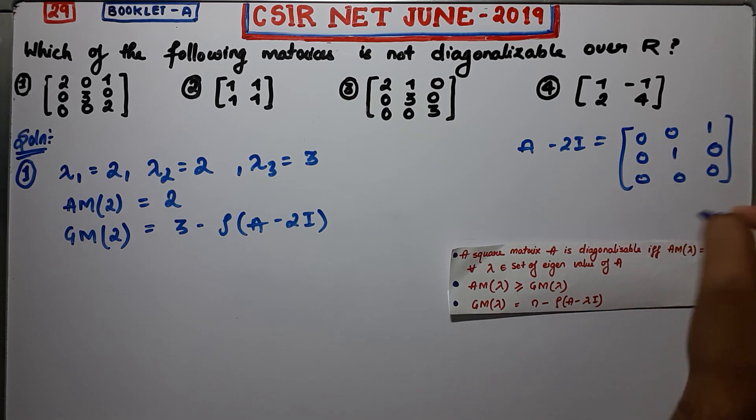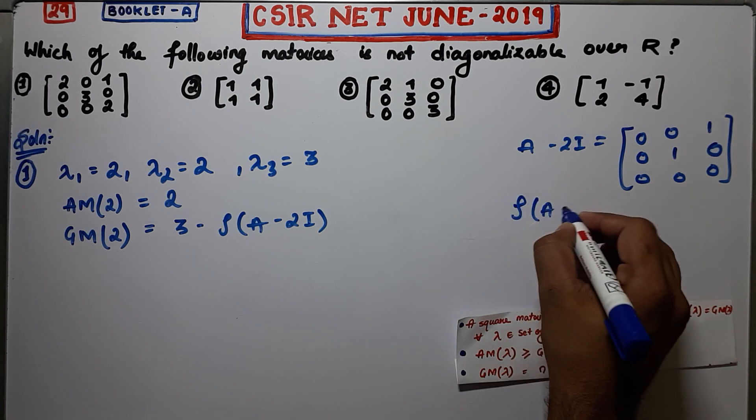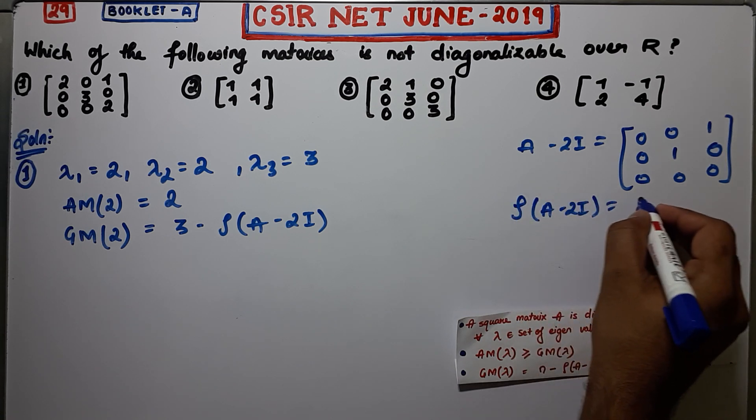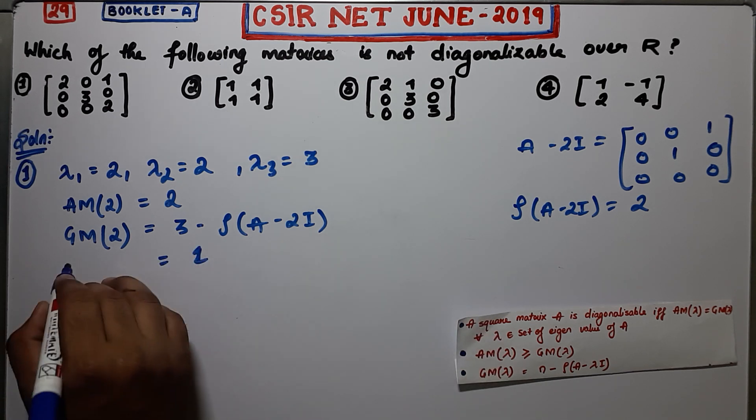Now what will be the rank? The rank of A minus 2I is given by 2. Since it is 2, therefore geometric multiplicity is 1.